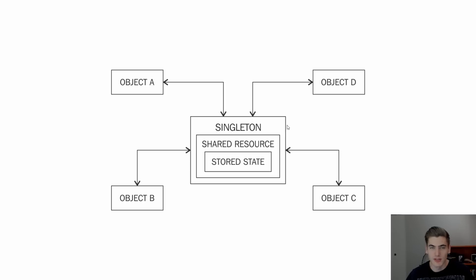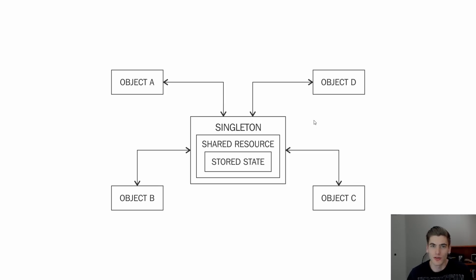As you can see from this example, we have our singleton in the middle, which is our one single object, and all of our other objects — A, B, C, and D — are all using that one instance of the shared object that holds all the state for the singleton. They don't create their own instance of that object each time. That's really all the singleton pattern is: a way to create a single object shared amongst a bunch of different parts of your application.